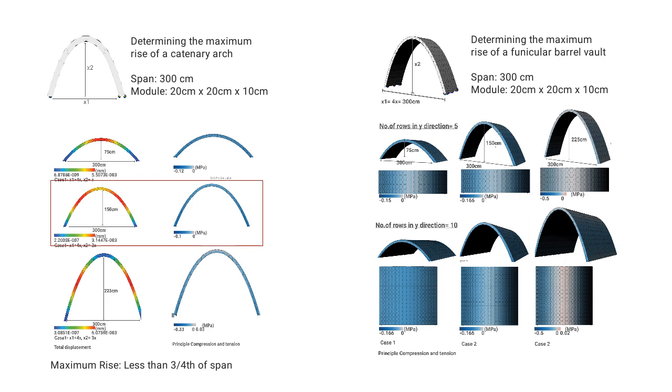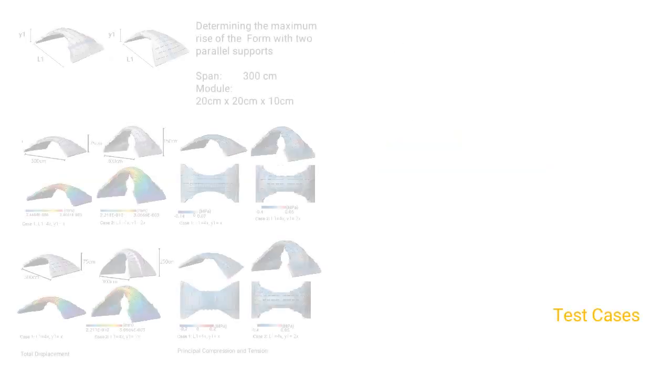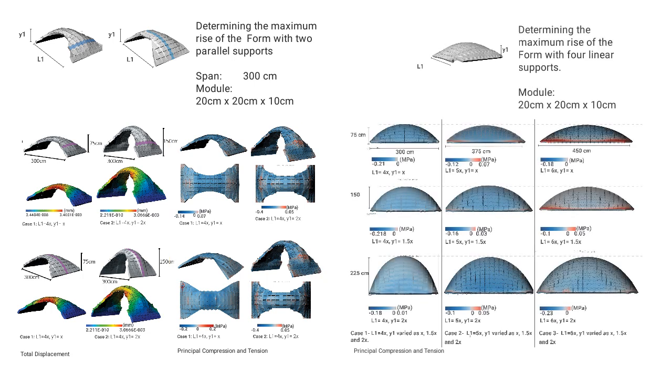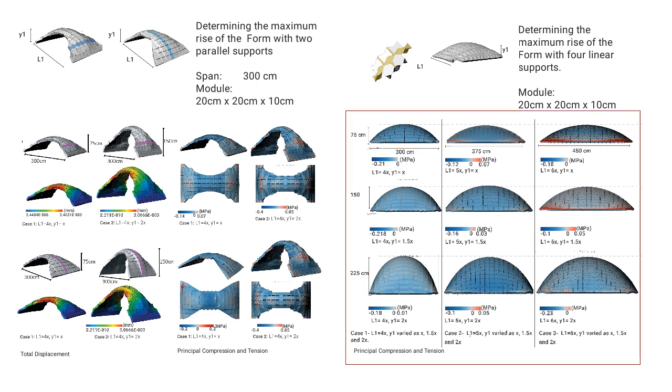For span of 300 centimeter, increase in height creates gaps between the modules leading to the failure of the structure. Therefore, further simulations were done by filling these gaps for a range of span 300cm to 450cm and rise 75cm to 225cm for funicular vaults with four linear supports. After this, performance of the structure improved. Filler material is yet to be decided.